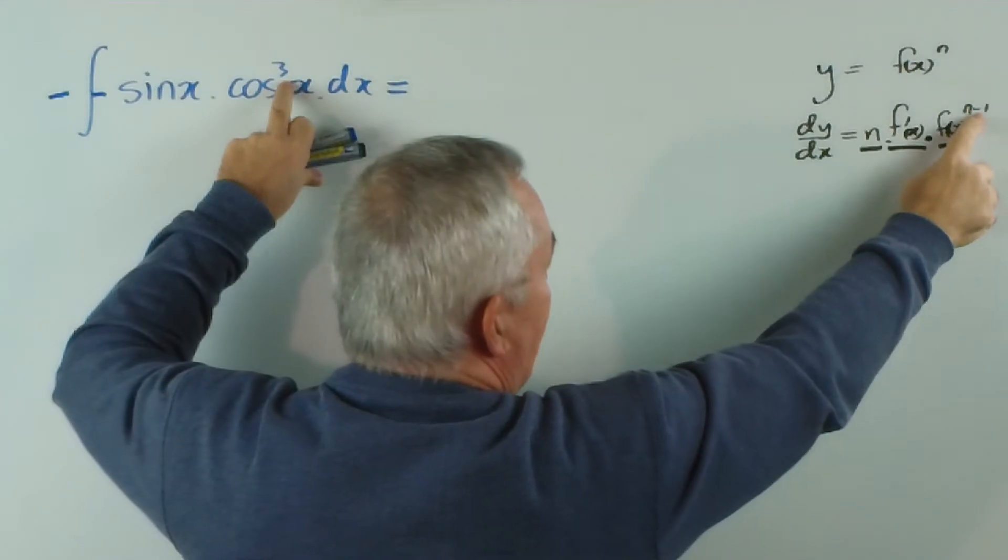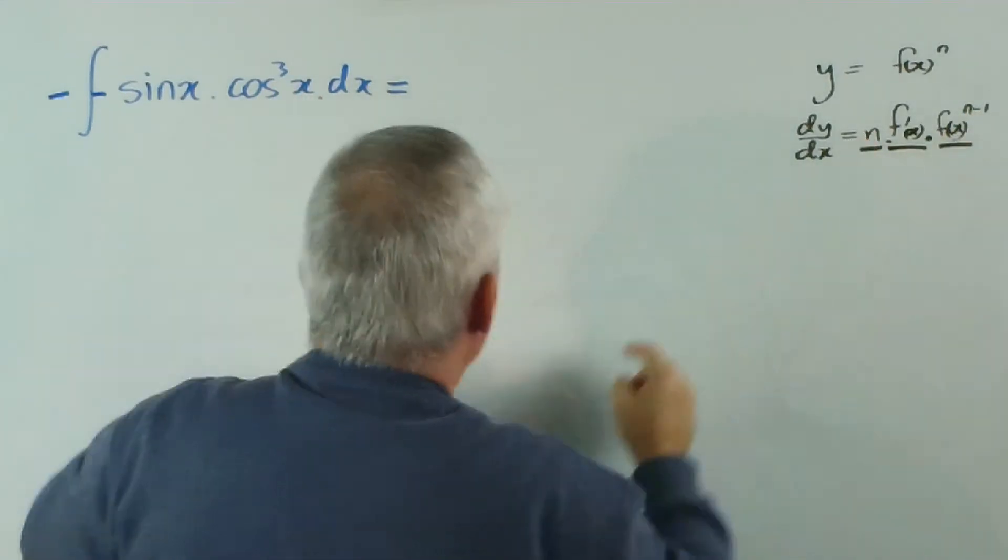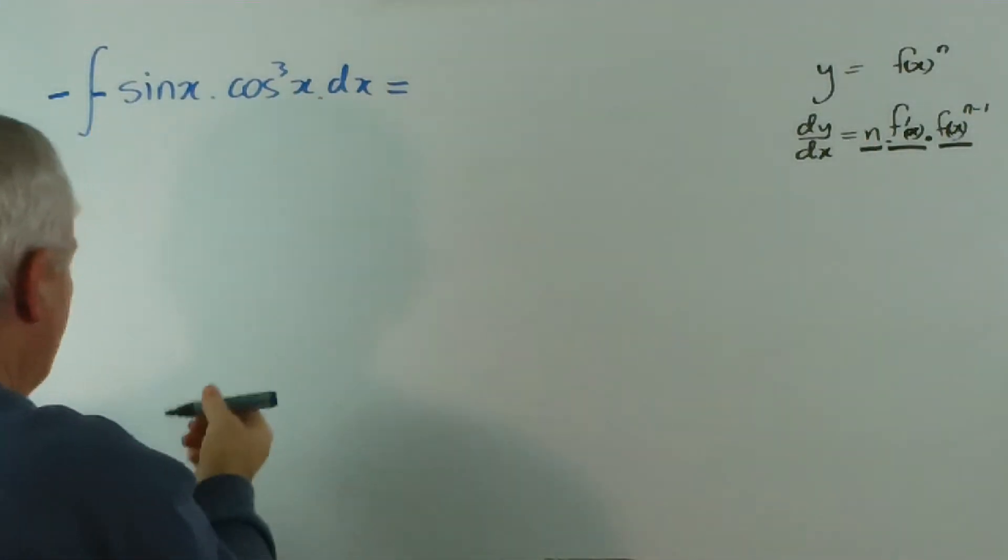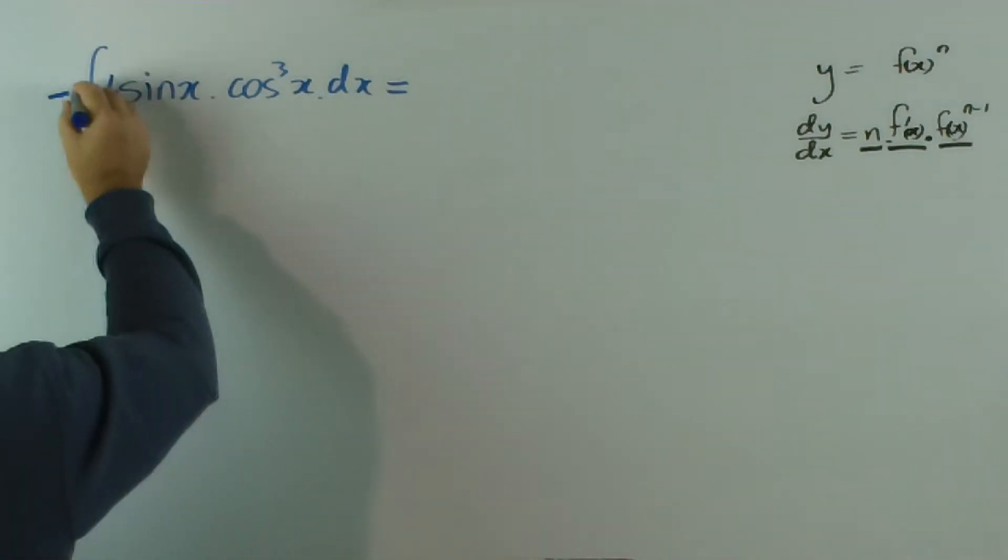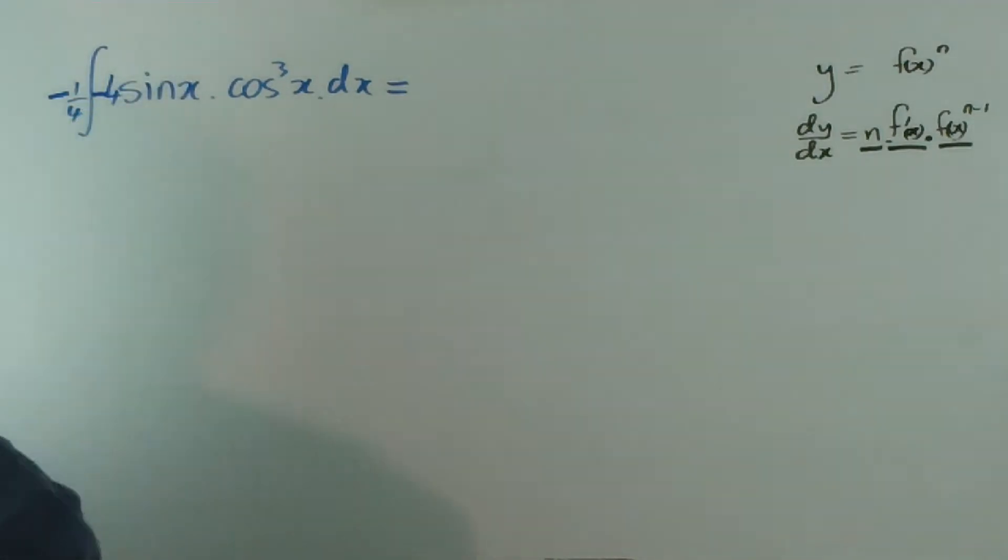And if three is n minus one, then this number's one more. So I'd love to have a four here, which I will do. I'll put it here. A four, so I compensate with a quarter out the front.